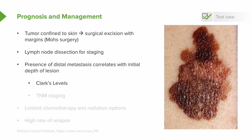The staging system commonly used is Clark's Levels — a grading system that looks at the depth of the lesion and predicts five-year mortality. Along the same lines, like many cancers, they use the TNM staging criteria: the size of the tumor, whether there is proximal lymph node involvement, and whether there is any evidence of metastasis.